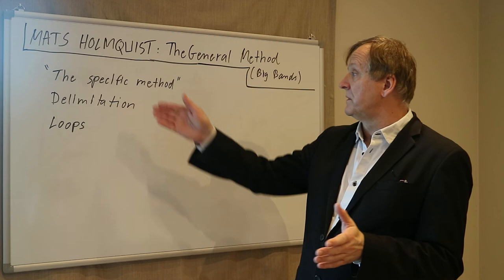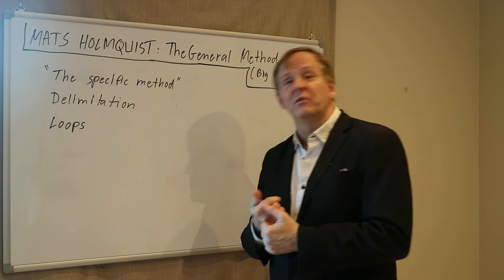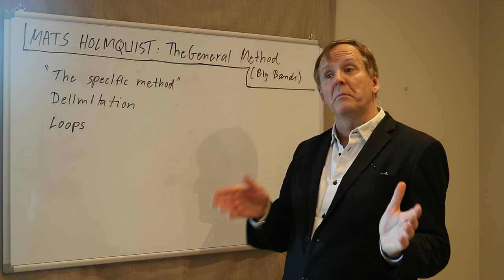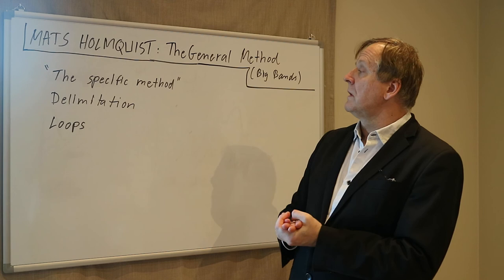When using the general method, one of the most important things is to use delimitation — which means focusing on the main problem first, then the second most significant issue, and so on. You create loops of usually two to four bars, you lower the tempo significantly, and you always use a metronome so you can go from a very slow tempo to faster and faster. Delimitation and loops are two of the best tools to use when rehearsing a big band, especially with the general method.